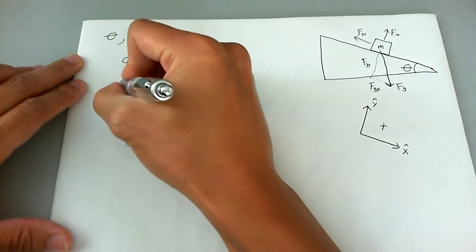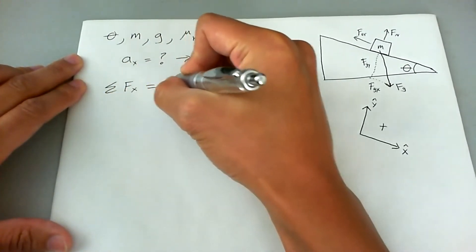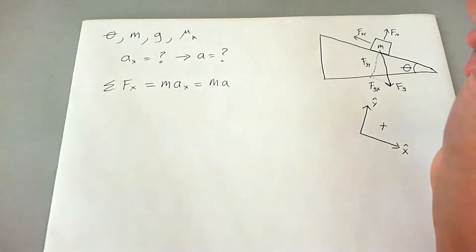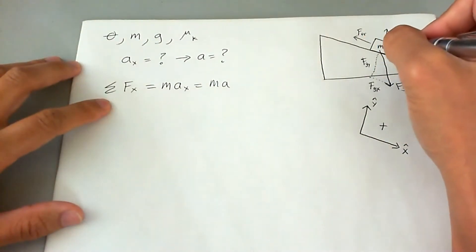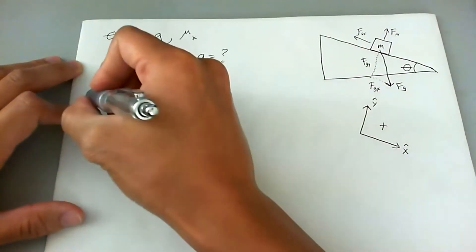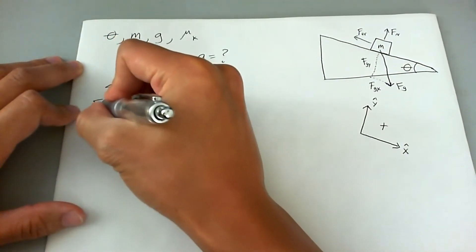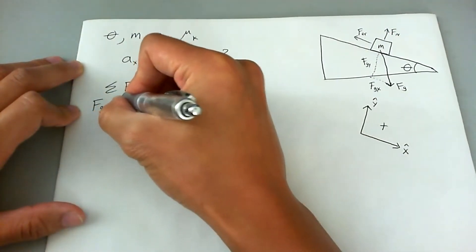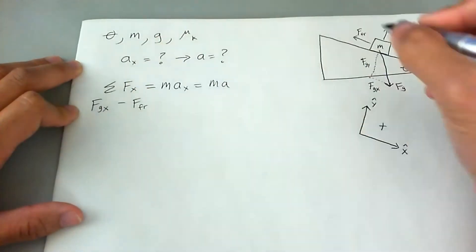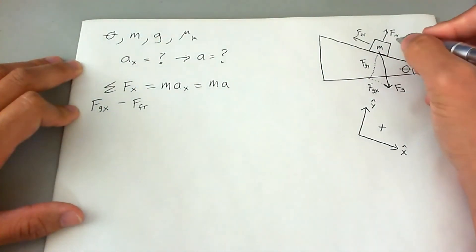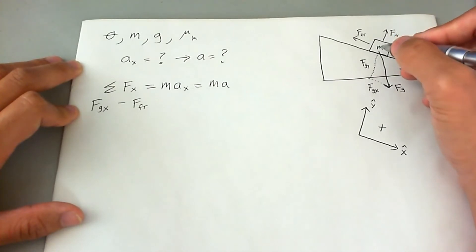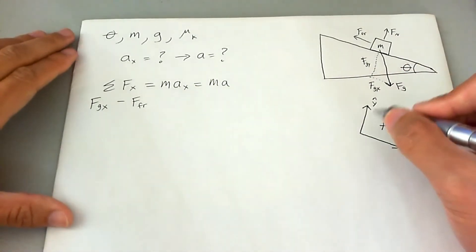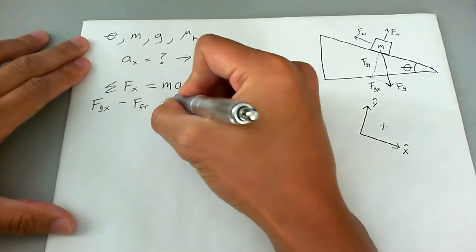Newton's second law states that the sum of all forces in the x direction equals the mass of the box times the acceleration in the x direction. In the positive direction, we have the force of gravity in the x direction and a frictional force. We don't have normal force here because the normal force is perpendicular to the x direction — and this is exactly why coordinate system rotation is very important.